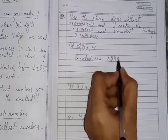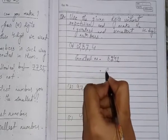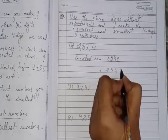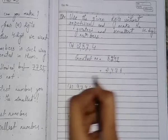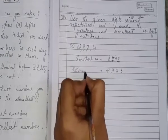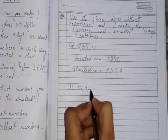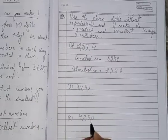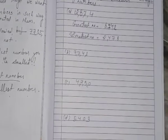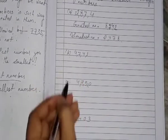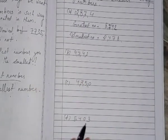If I write it just opposite like this, 2478. This is the smallest one. Like this you can do these questions also. You can take a screenshot of this and practice at home.